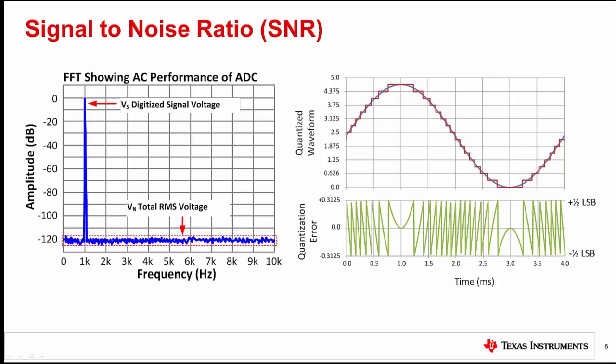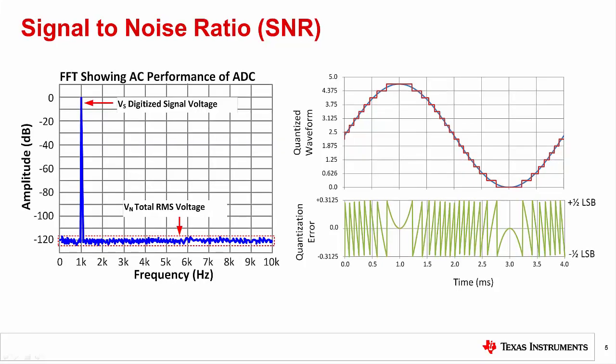Here, we are considering the ideal data converter, where all the noise is from quantization noise. In practical cases, other noise sources will contribute to the noise floor. The total RMS quantization noise can be theoretically predicted by integrating the time domain quantization error waveform. We will see how the noise floor can be used to calculate the SNR for an ideal n-bit data converter.